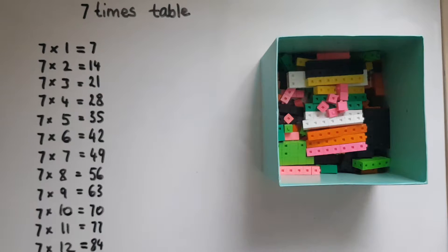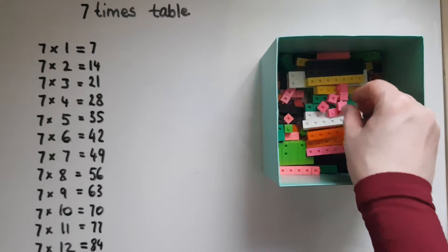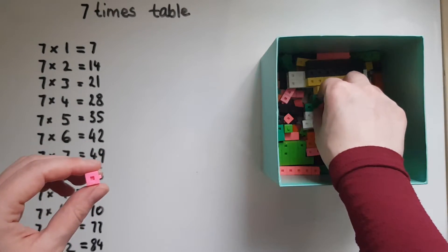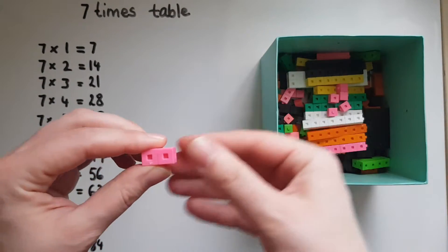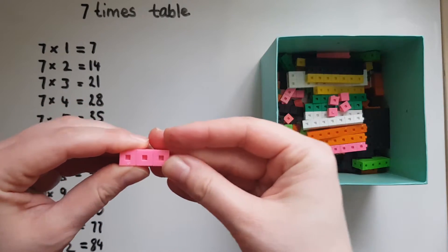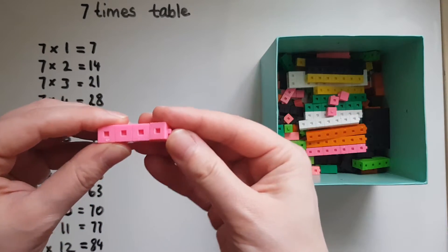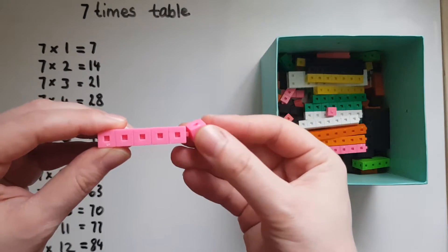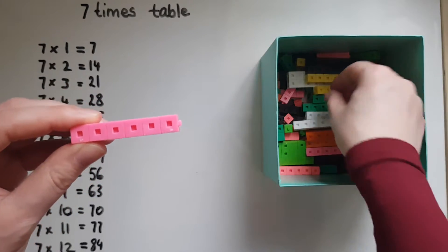As the name suggests, seven times table means we're doing something seven times. So if I put my hand in this box seven times and I got one cube each time, I'll end up with one, two, three, four, five, six, and seven.